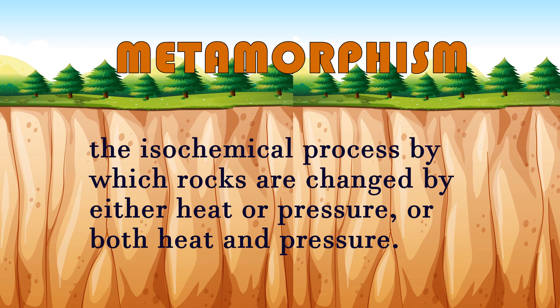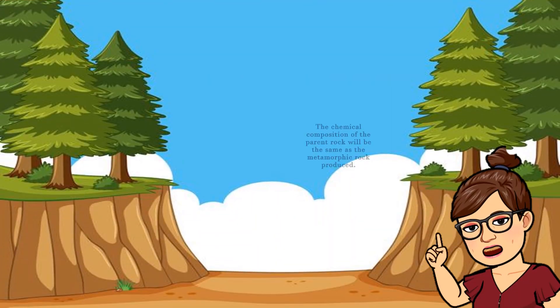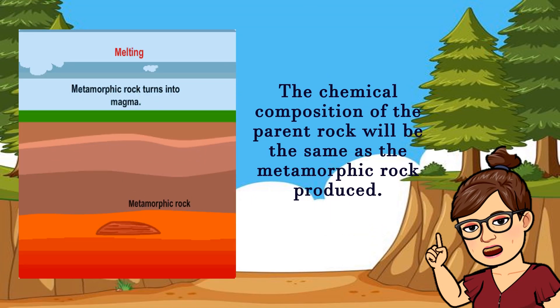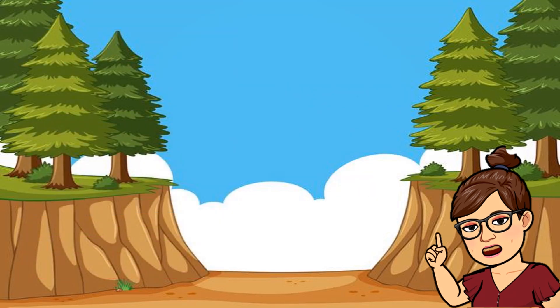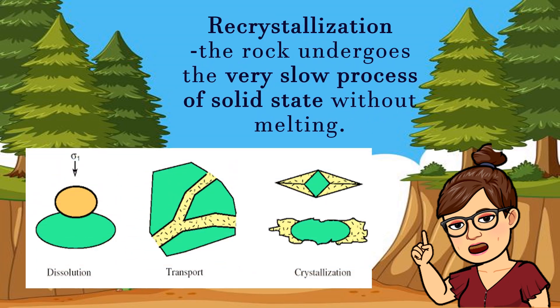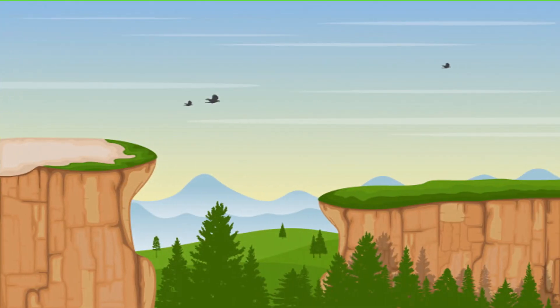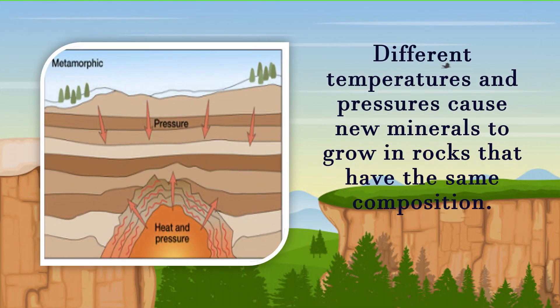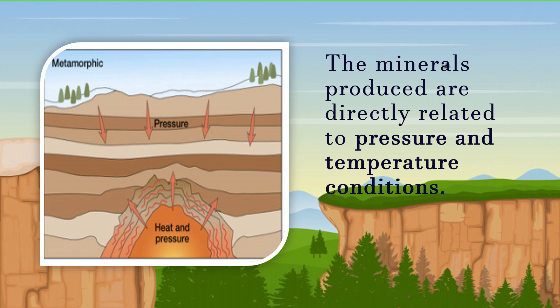Metamorphism is the isochemical process by which rocks are changed by either heat or pressure, or both heat and pressure. The chemical composition of the parent rock will be the same as the metamorphic rock produced. The rock undergoes the very slow process of solid-state recrystallization without melting. Different temperatures and pressures cause new minerals to grow in rocks that have the same composition.